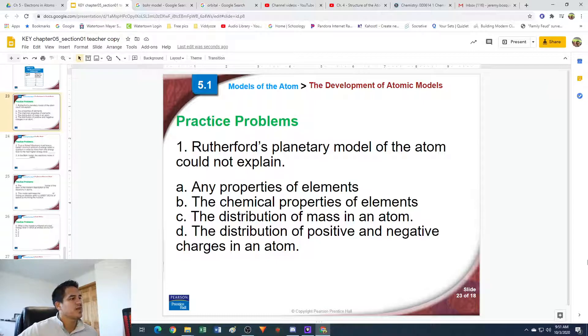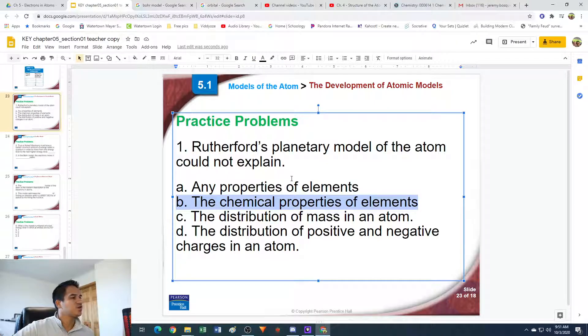Let's begin. Number one: Rutherford's planetary model of the atom could not explain... Rutherford's model could not explain any properties of elements - that is not entirely true. Letter B, the chemical properties of elements - that is true. The distribution of mass in an atom? Nope, that's not true because his model had the nucleus and the electrons, so that showed where the mass was distributed. Letter D, the distribution of positive and negative charges in an atom - that was also shown because he showed the positive charge of protons in the nucleus and negative ones on the outside. So I would say it's letter B, the chemical properties of elements. His model did show some properties, just not chemical properties. It showed mainly physical ones. We will choose letter B.